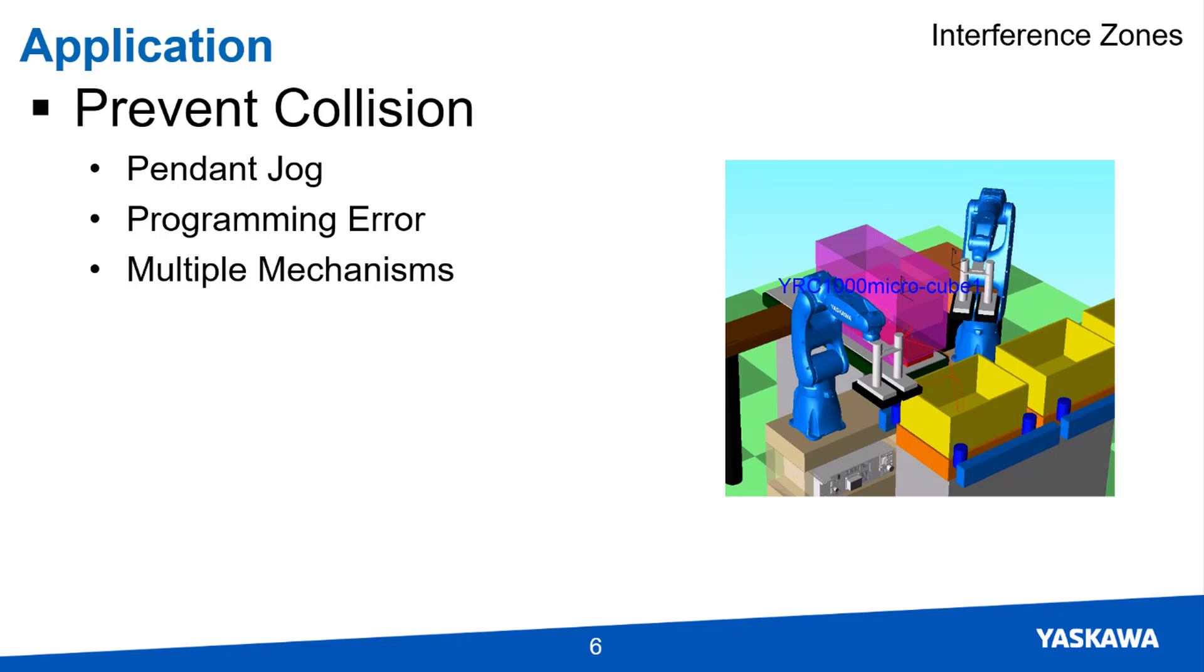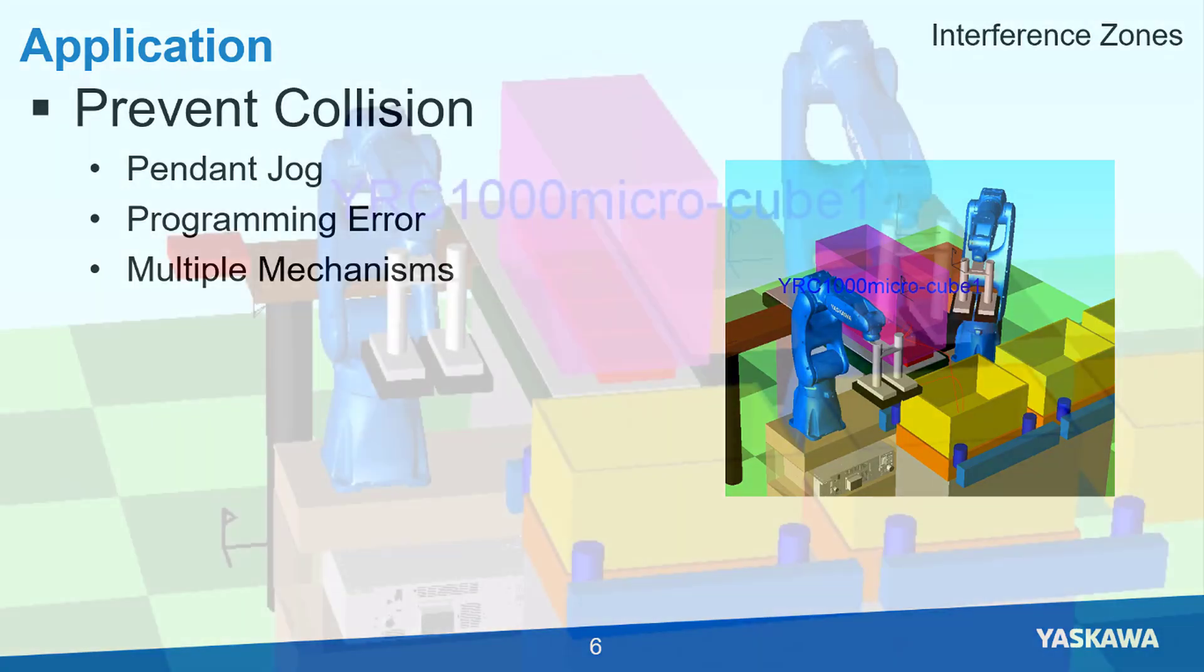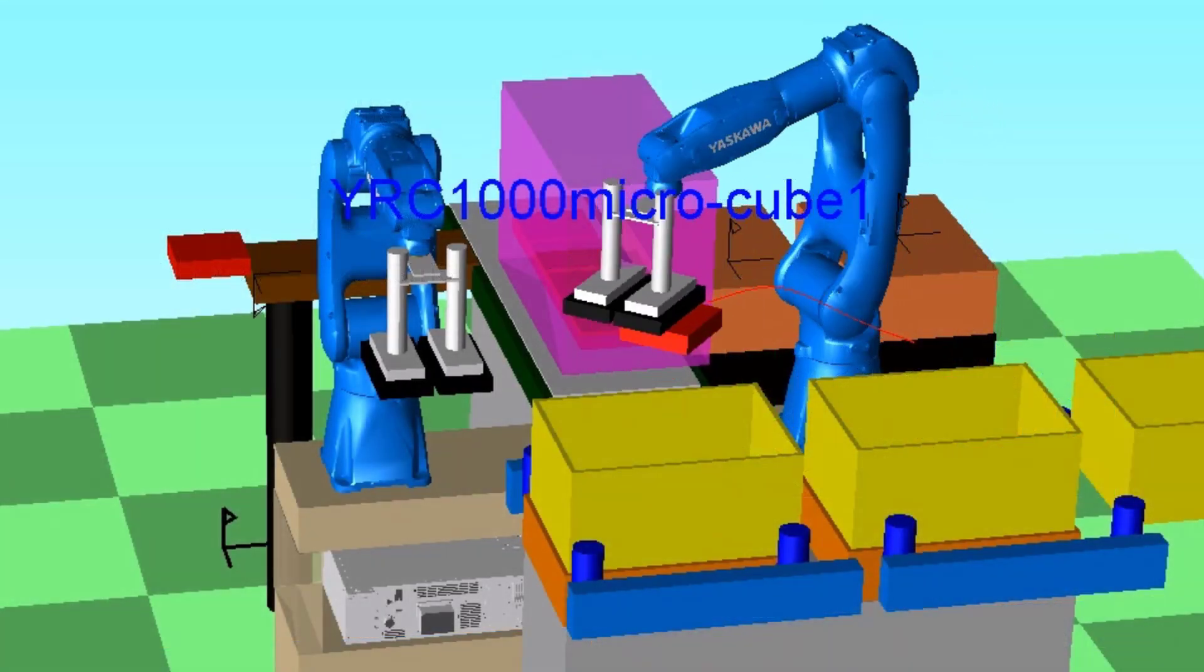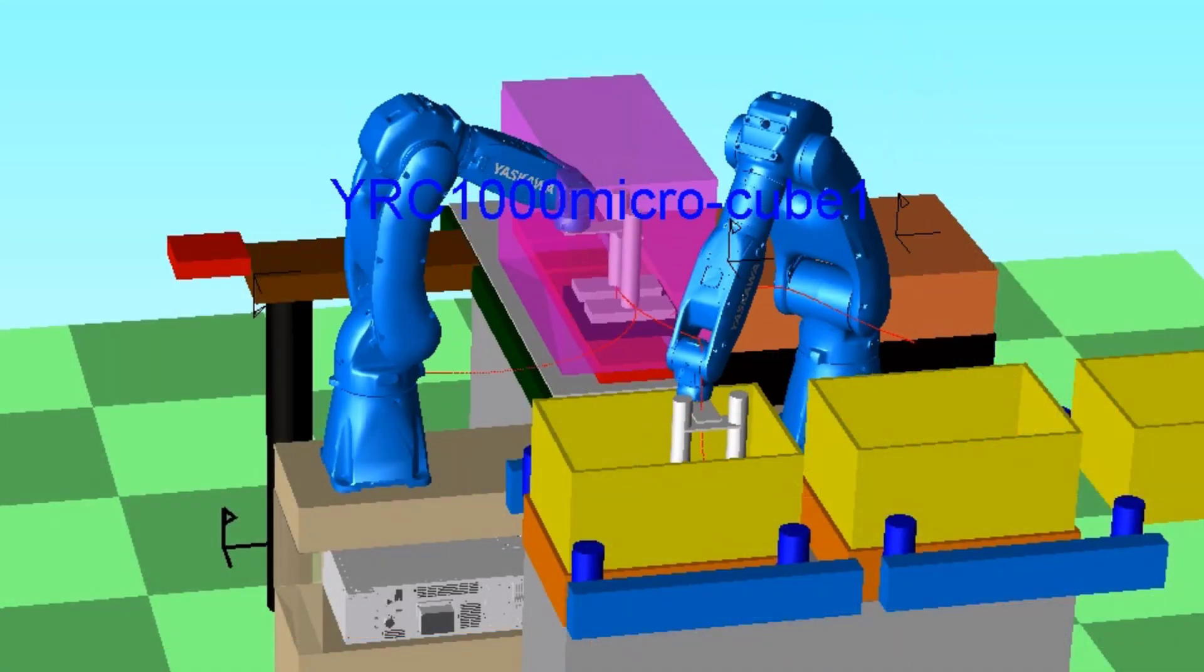Interference zones could also prevent damage if an error in programming results in unexpected motion.